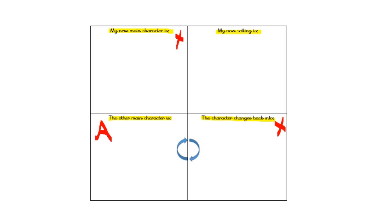These two characters will more than likely be people and this one is the animal. Your setting needs to link to your characters. For example, if your main character is a teacher, your setting might be a school. If it's one of your friends, the setting might be their house. The main character and the character they change back into need to be people or humans, and the other character is normally an animal.